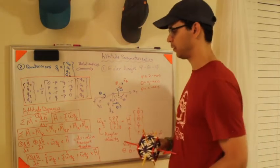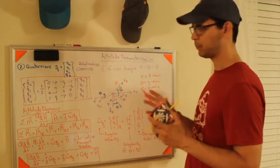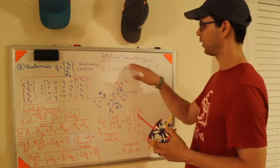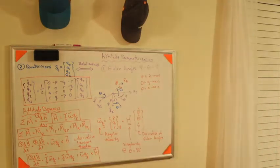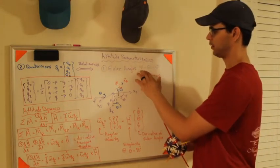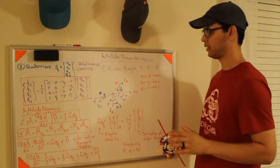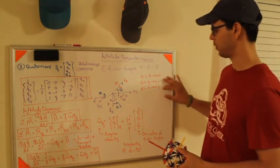Okay, so ignore the right-hand side of the board here for a second. Let's just focus on the right-hand side. The simplest way to parameterize attitude is by using what's called Euler angles. And Euler angles are typically defined as psi, theta, and phi. I'll talk about this diagram in a second, but I just want to show you this roadmap here.